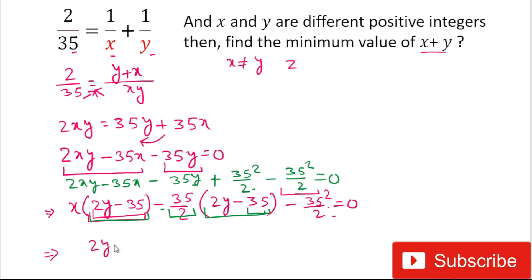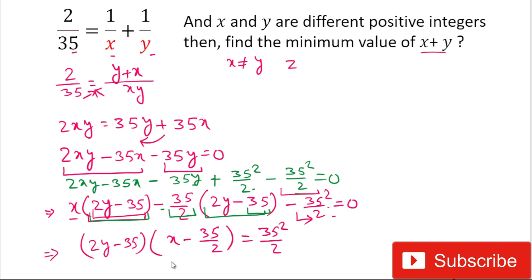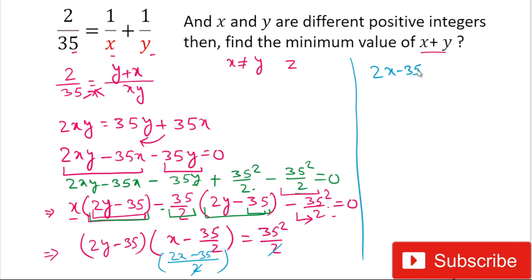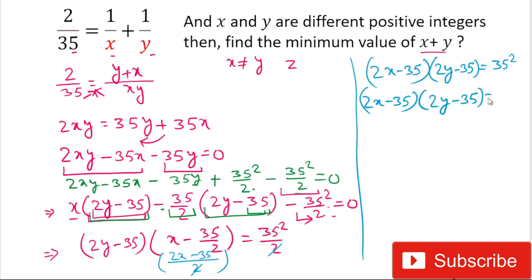Taking the constant term to the right-hand side, we get +35²/2. Simplifying, we take 2 common giving (2x - 35), and the 2s cancel. We can now write (2x - 35)(2y - 35) = 35². Since 35 = 5 × 7, we have 35² = 5² × 7². We have two terms: (2x - 35) and (2y - 35), and the values of x and y will be interchangeable.